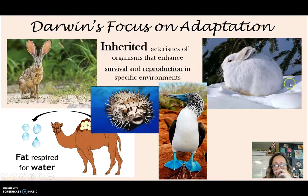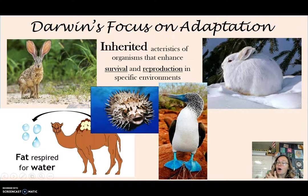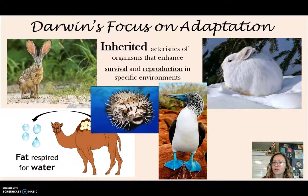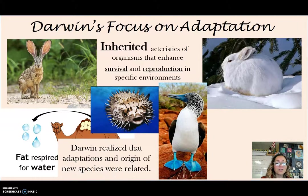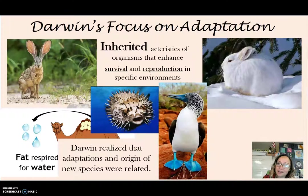When we say 'particular environment,' that's very important. Take the snowshoe hare — lots of fur, short ears — that's an adaptation for living in cold weather. You take that snowshoe hare and move it to the desert, it's no longer an adaptation. That's going to hinder its chance of survival and reproduction. Darwin realized that adaptations and the origin of new species were actually related.